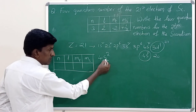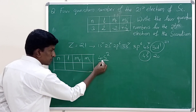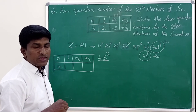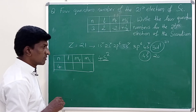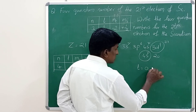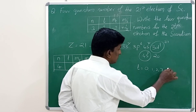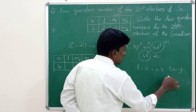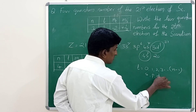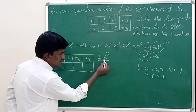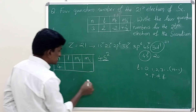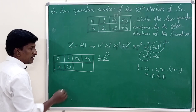What is the principal quantum number of the 20th electron in scandium? It is the main shell, so the principal quantum number is 4. Then what is the l value? The l values are 0, 1, 2, 3 up to a maximum of n − 1. Here it is the s orbital, so the angular momentum quantum number l = 0.